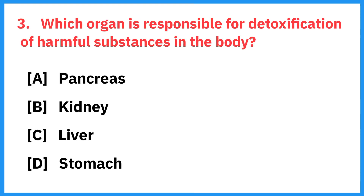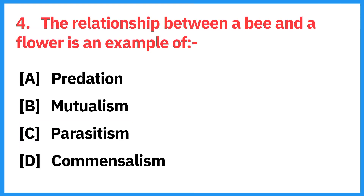Which organ is responsible for the detoxification of harmful substances in the body? Correct answer is liver. The relationship between a bee and flower is an example of? Correct answer: mutualism.